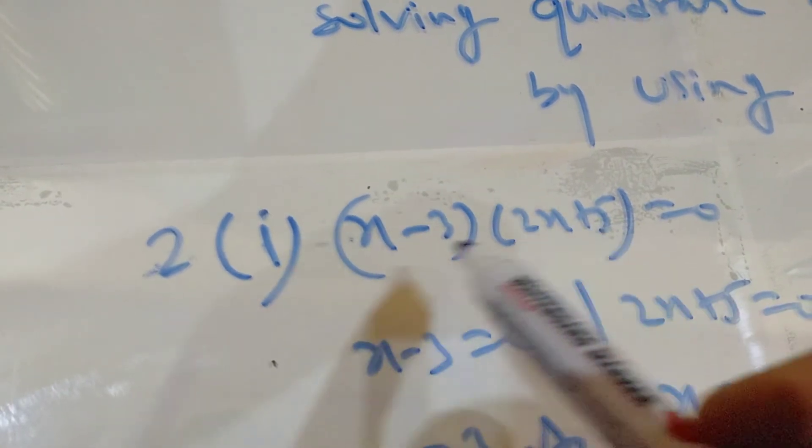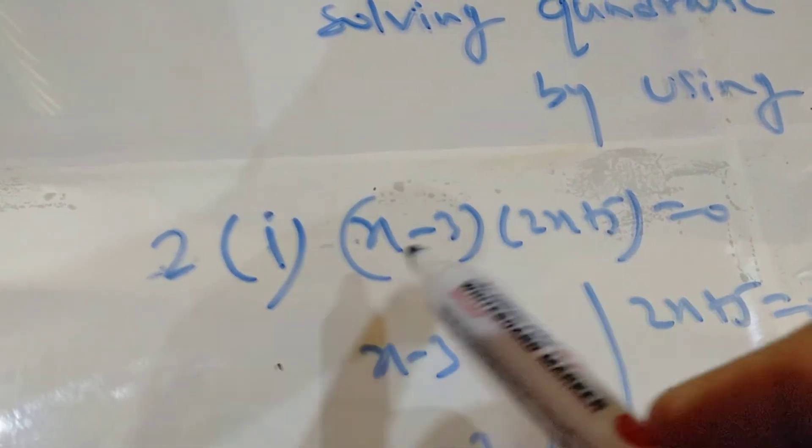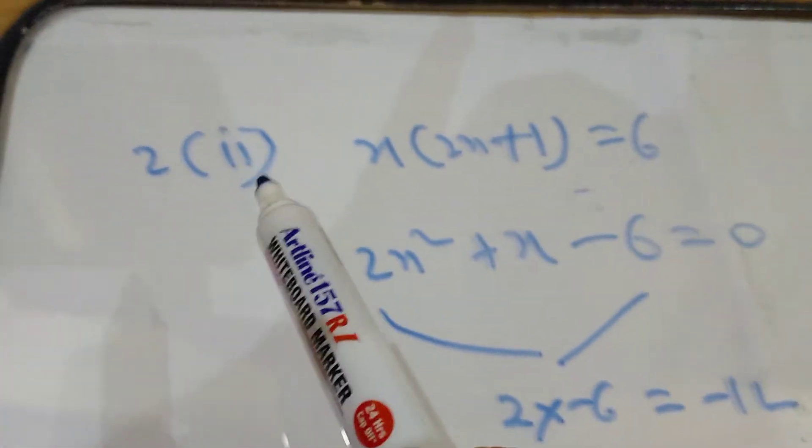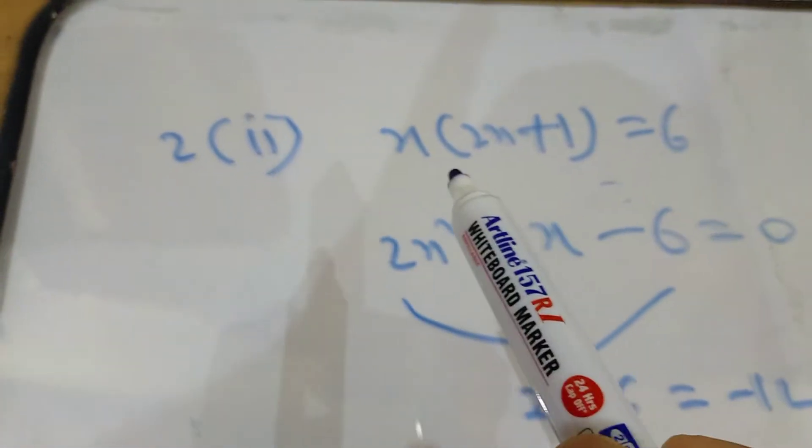In question number 2 first part, we can directly apply the zero product rule since two factors are already given equal to 0. First factor equal to 0, second factor equal to 0, giving the answers x = 3 and x = −5/2.